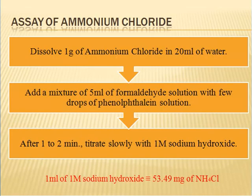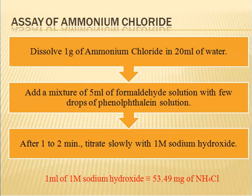To perform the assay of ammonium chloride, 1 gram is dissolved in 20 ml of water. Then a mixture of 5 ml formaldehyde solution with a few drops of phenolphthalein is added. After 1 to 2 minutes, titrate slowly with 1 ml sodium hydroxide solution. To calculate the amount of ammonium chloride, 1 ml of sodium hydroxide is equivalent to 53.49 mg of ammonium chloride.